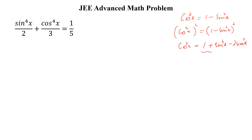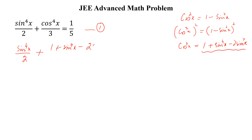So we substitute this value into the question and we get: sine to the power 4x divided by 2, plus 1 plus sine to the power 4x minus 2 sine square x, all divided by 3, is equal to 1 over 5.